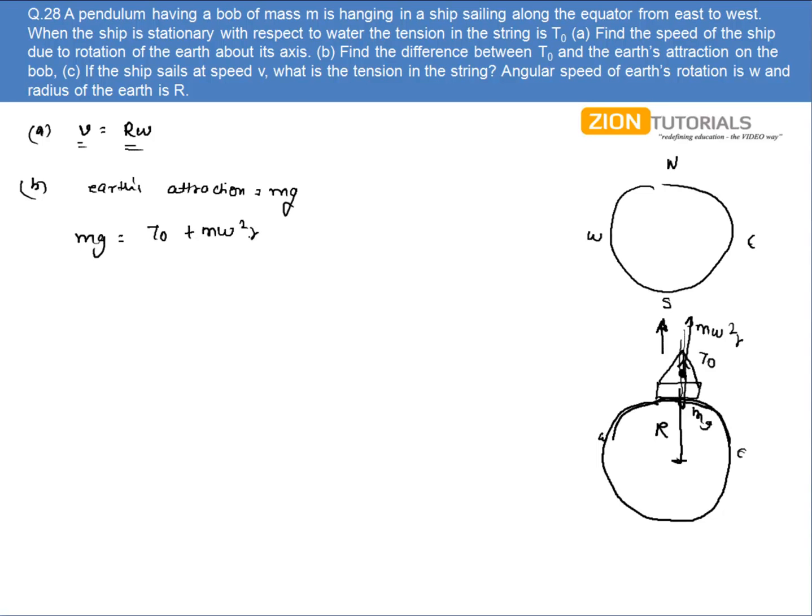So I can write Mg equals T₀ plus M omega² R. And I have to calculate the difference between T₀ and the earth's attraction - that is Mg minus T₀, which equals M omega² R, where omega is the rotation of the earth and R is the radius of the earth. So that is the answer.